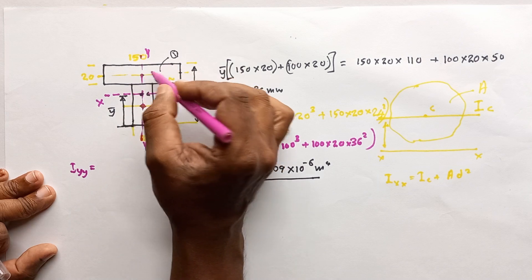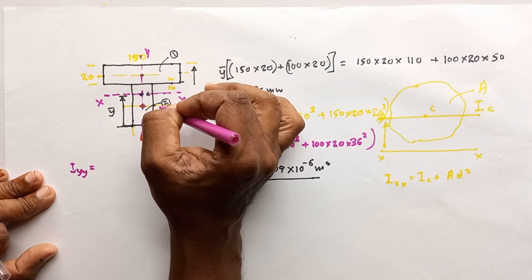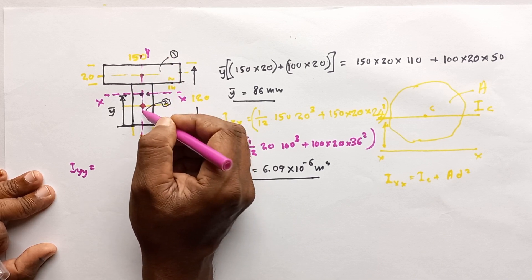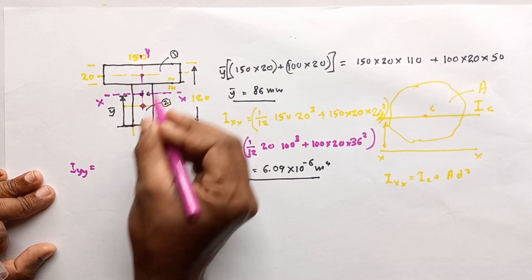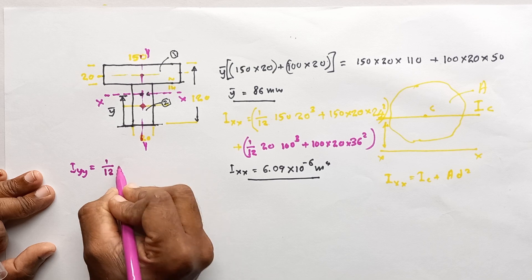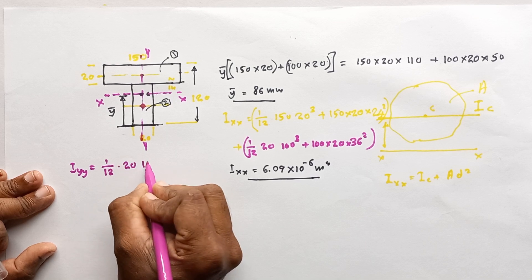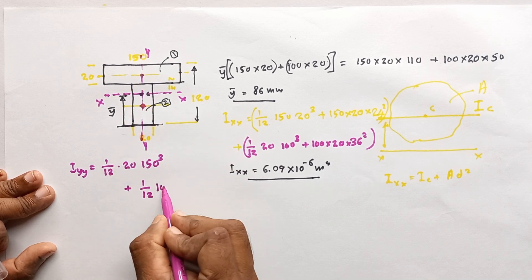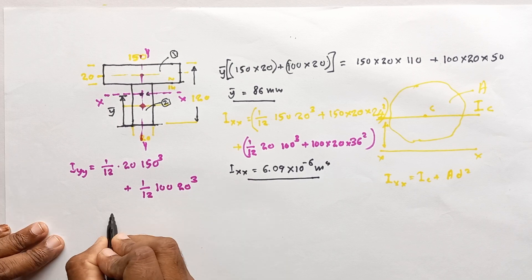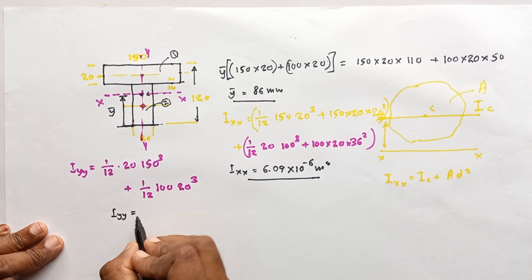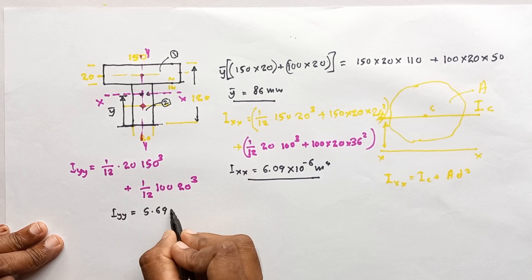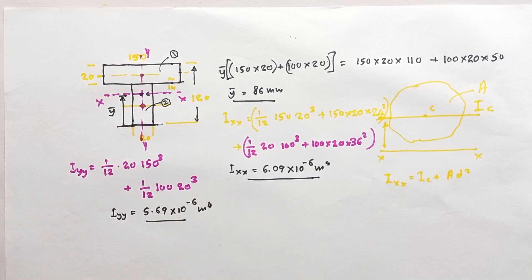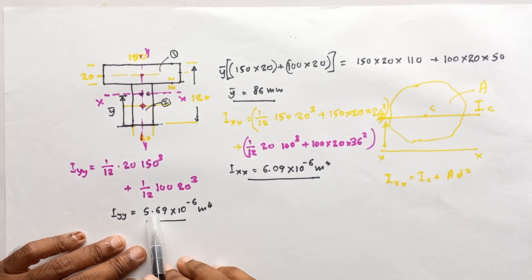For I_yy, dividing the composite area into area one and area two: for area one, (1/12)×20×150³; for area two, (1/12)×100×20³. Adding these gives I_yy = 5.69 × 10⁻⁶ m⁴. Comparing the two values, I_yy is the minimum and I_xx is the maximum.